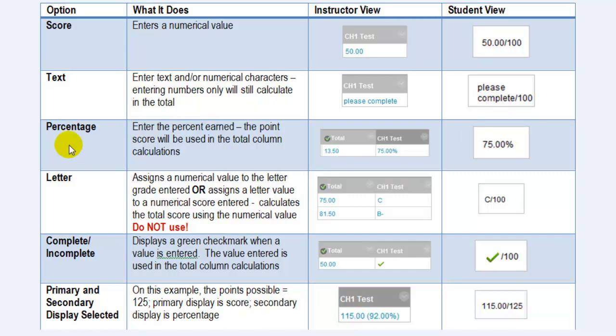If you display as percent, as the instructor you are going to enter the percent earned. However, when you look at the total column, you'll see that the total column displays the points that were earned, not the percentage. The student will only see the percentage.